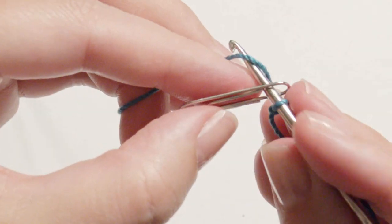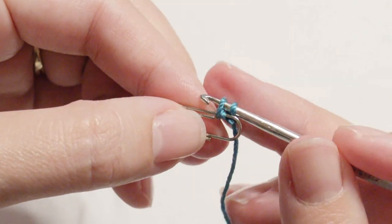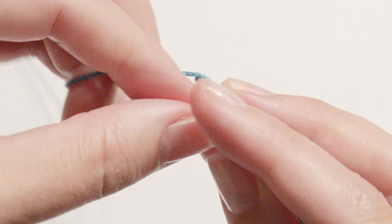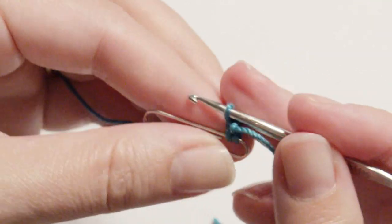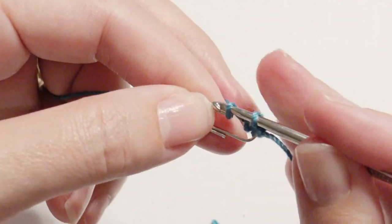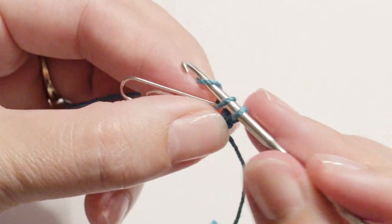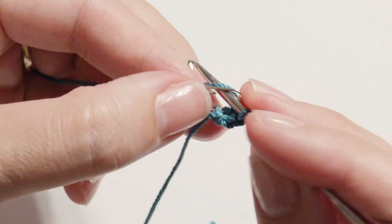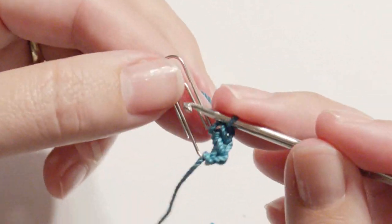Now insert your hook, grab the yarn and pull it through. Then yarn over and pull through two loops. Now single crochet eight more times for a total of nine. Make sure that you have a couple of single crochets past that first part of the metal of the paperclip, which I'll show you in the video.